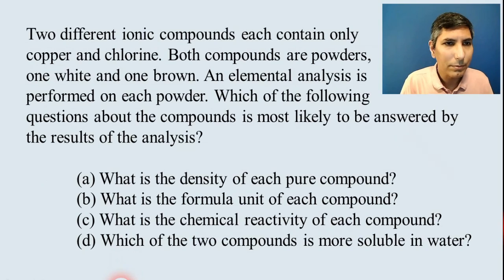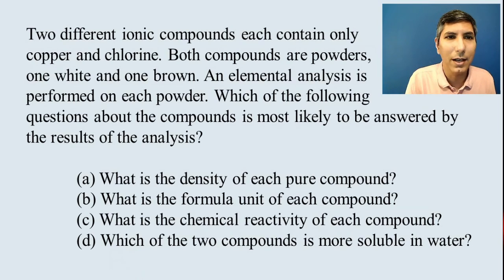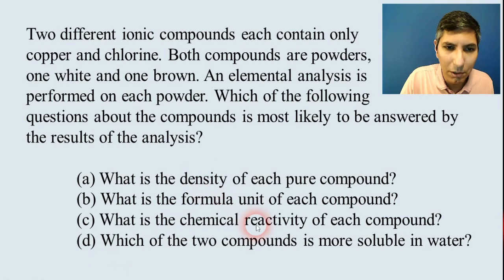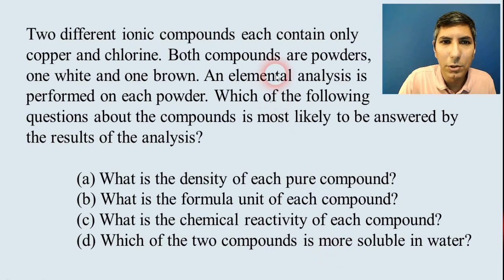Let's try one more multiple choice question. Let's imagine that we have two different ionic compounds that each contain only copper and chlorine. Both compounds are powders, one white and one brown. An elemental analysis is performed on each powder. Which of the following questions about the compounds is most likely to be answered by the results of the analysis? And we have different questions here. What is the density? What's the formula unit? What's the chemical reactivity? Which is more soluble? Well, if we're doing an elemental analysis, then what we'll be able to find out will be how many atoms of each element are in the compound.